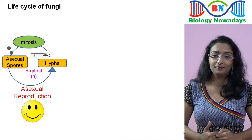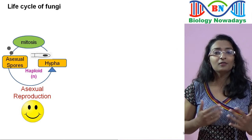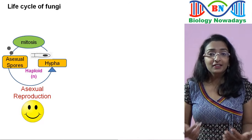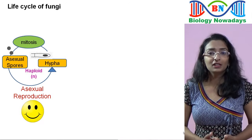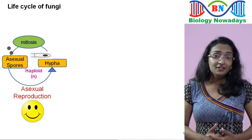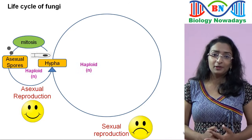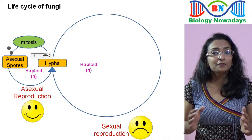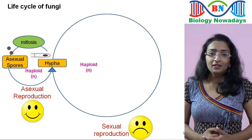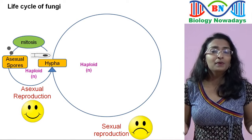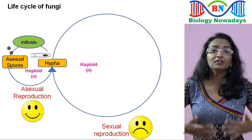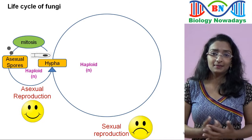But there is a problem — these spores cannot withstand unfavourable conditions. So when conditions are unfavourable for fungal growth, meaning when it is dry, fungi will go for sexual reproduction. Here, the offspring are genetically different from their parents, so some of them may be better adapted to those unfavourable conditions and can grow better than their parents.